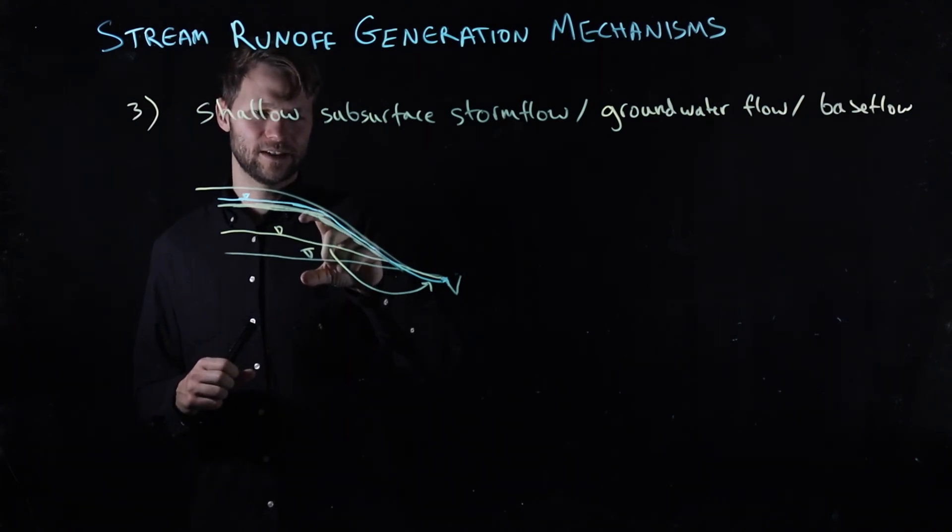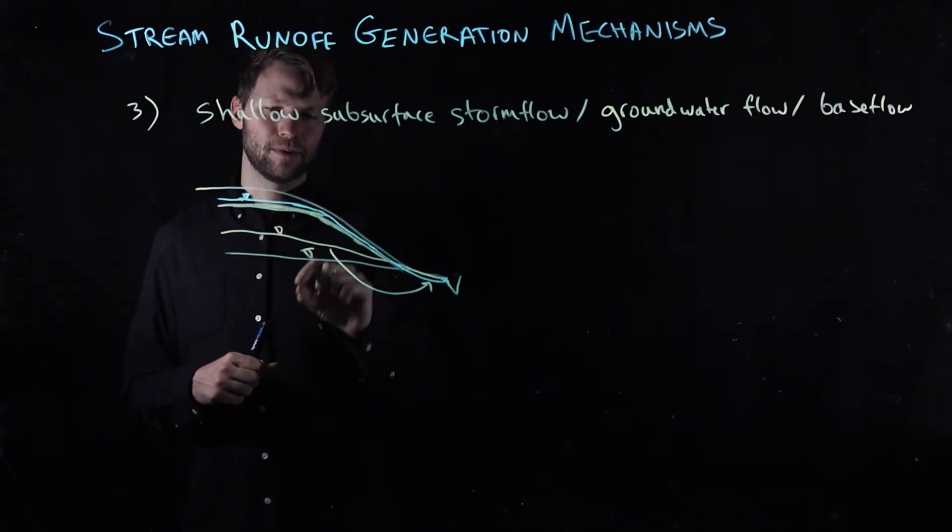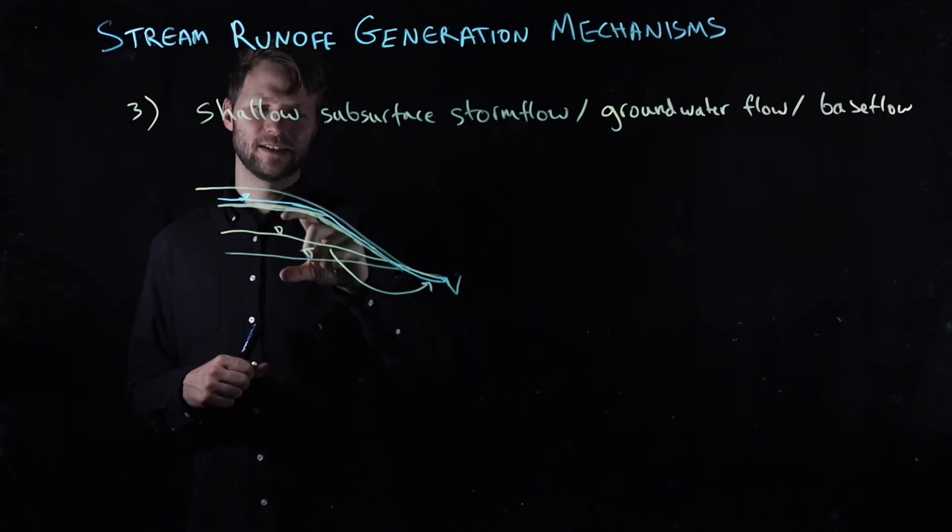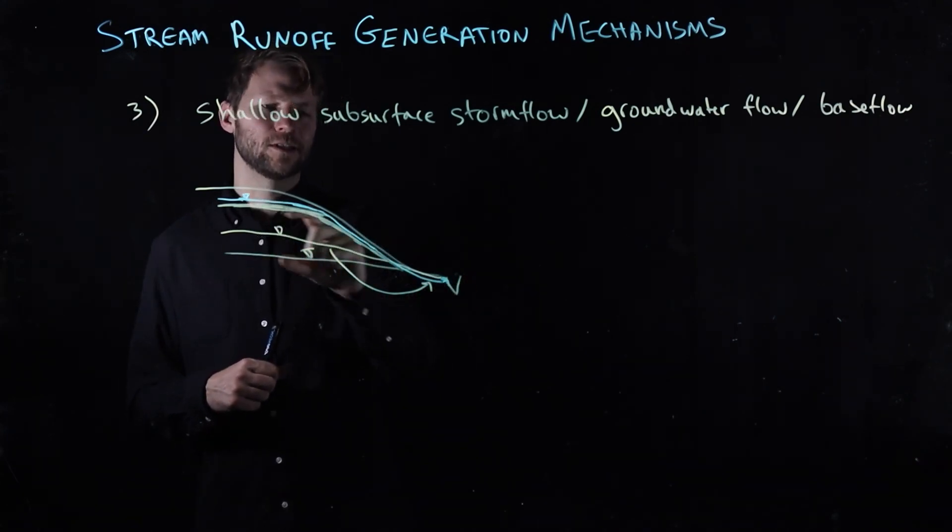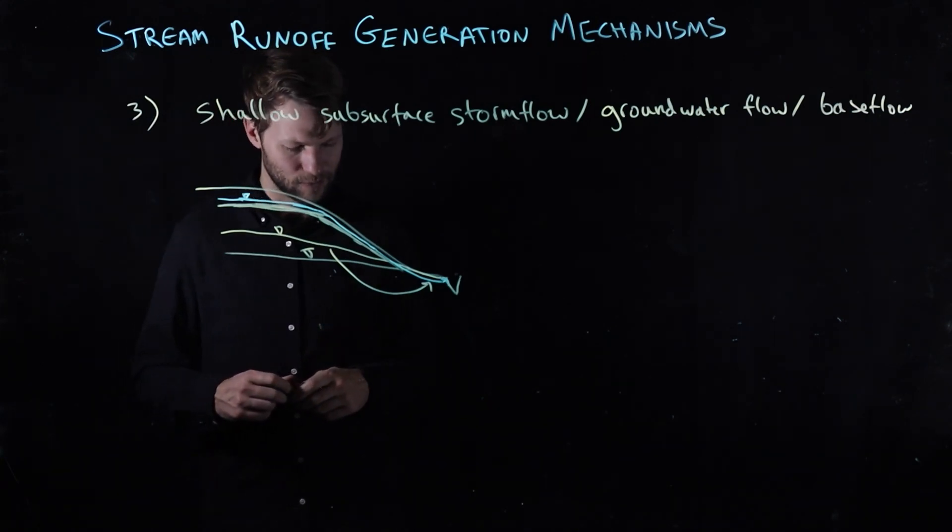The other thing is that as you're getting this thicker zone, you're not only steepening the head gradient towards the channel, but you're increasing the overall thickness of this hill slope aquifer system. So the transmissivity is increasing as you're moving towards the channel as well.